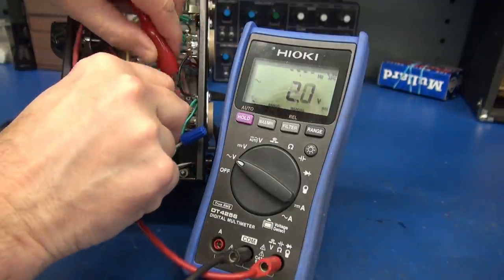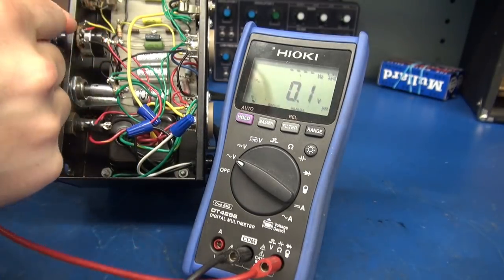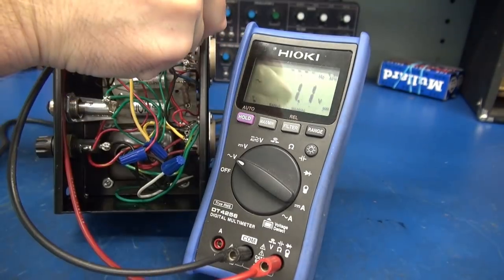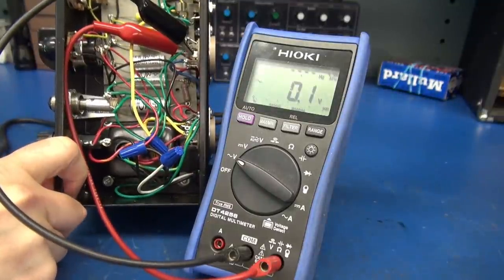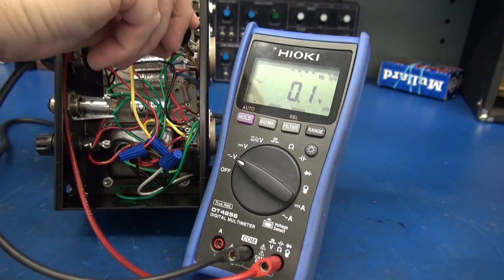Lastly, we need to check the 6 volt AC. Go up here. There we are. And yep, 6 volt windings are alive too. Good deal. So the power transformer is good.